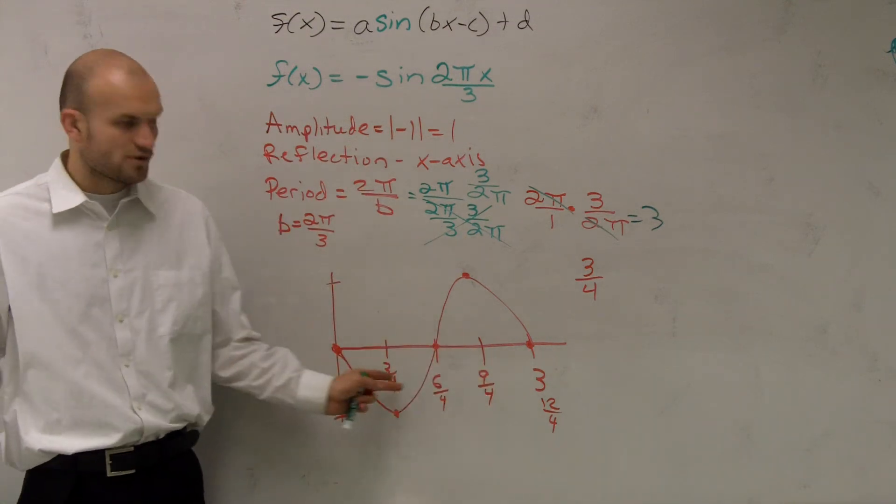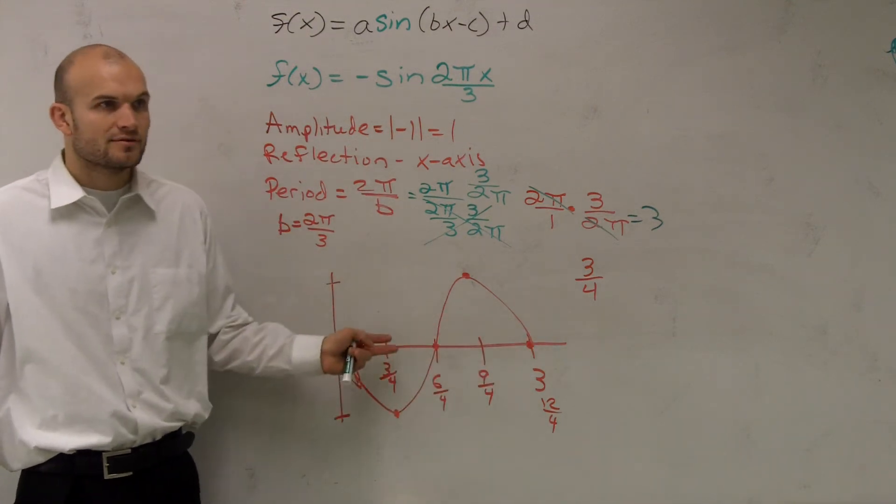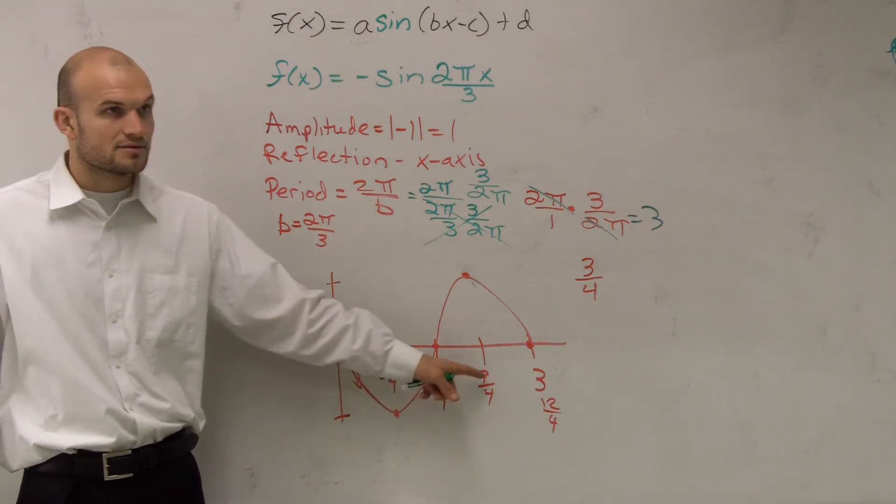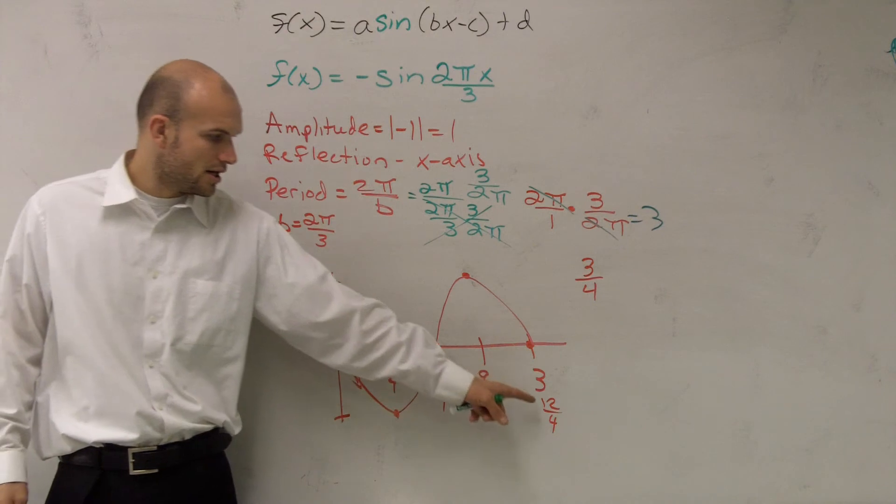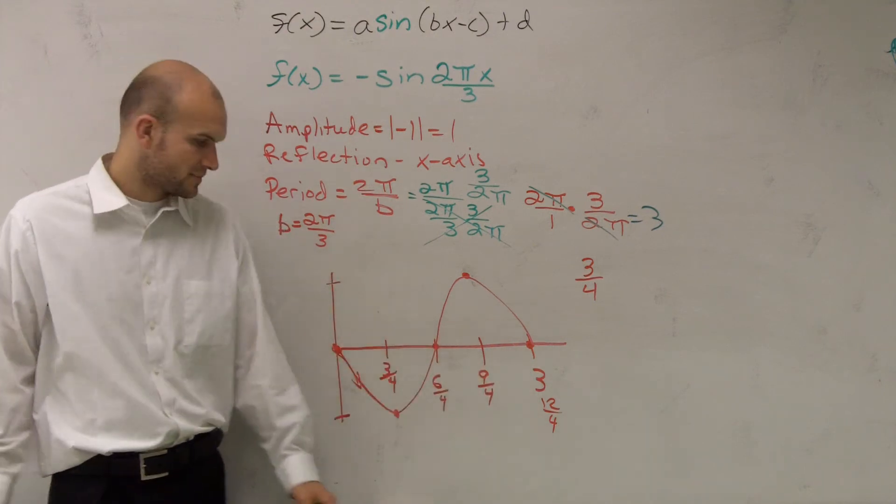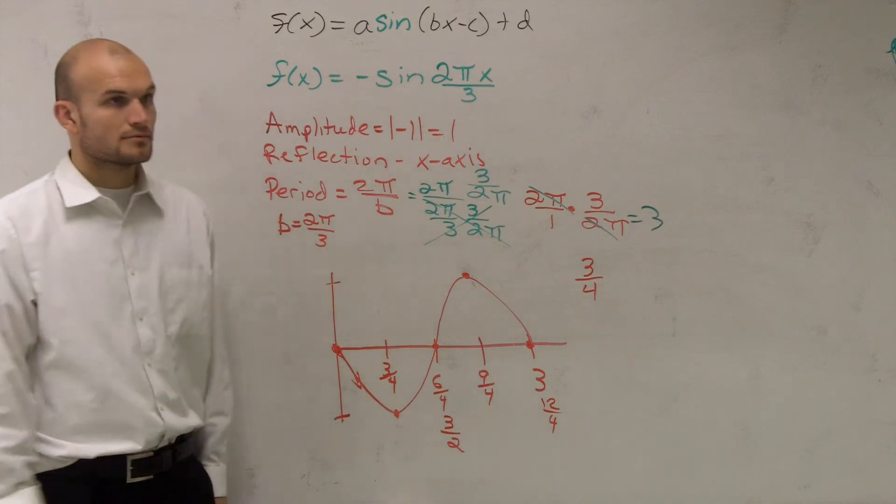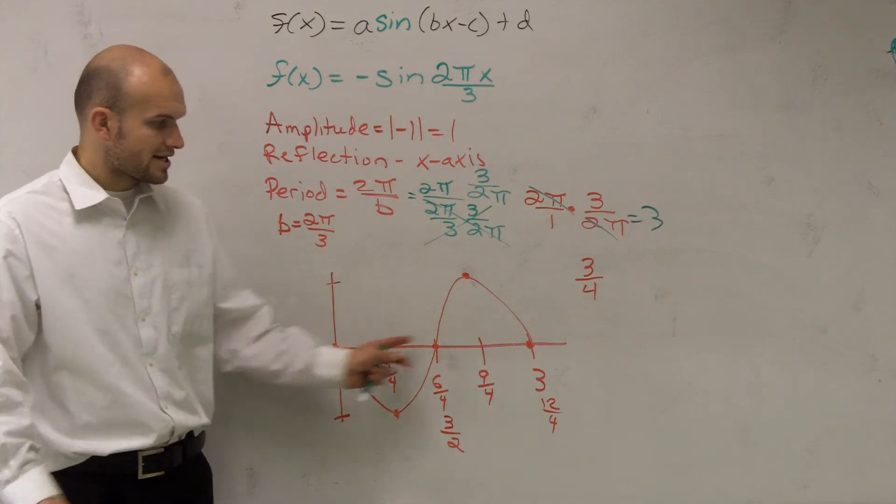And then really this one is going to be 12 fourths, which we reduce down to 3. Okay? So if you just wrote them in the fraction notation, that's perfectly fine for me. Obviously you can reduce this down to 3 halves. You can't reduce 9 fourths. And this we reduce down to 3. So we can reduce this one down to 3 halves. Okay?